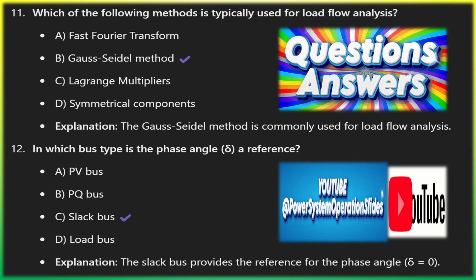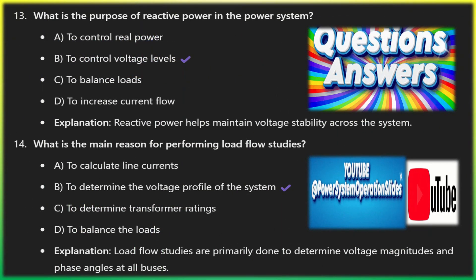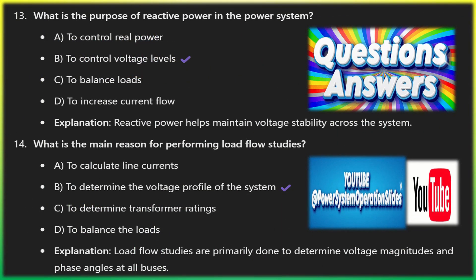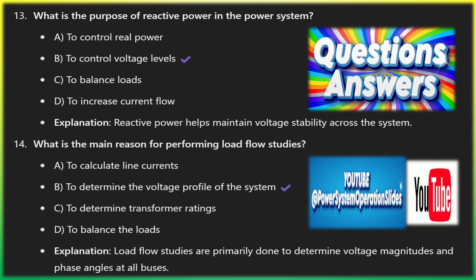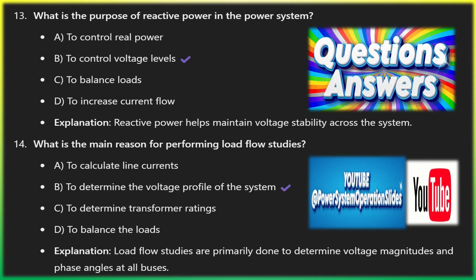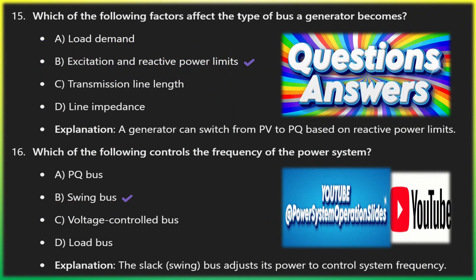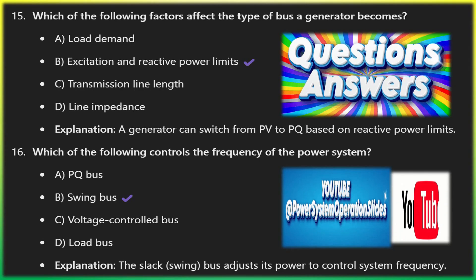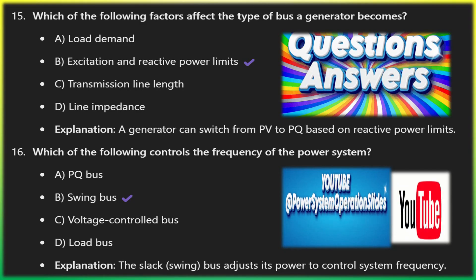Voltage-controlled bus — another name for PV bus. This is just another term for the generator bus, where voltage is regulated by adjusting reactive power output. It ensures voltage stability across the grid by controlling voltage levels. Variables known: real power P and voltage magnitude V. Variables unknown: reactive power Q and voltage angle. Example: generator buses in power plants, ensuring voltage control at the point of power generation.